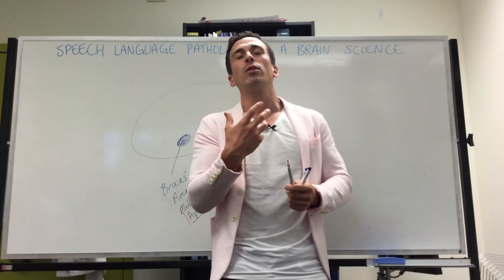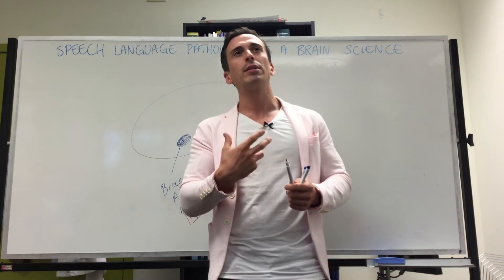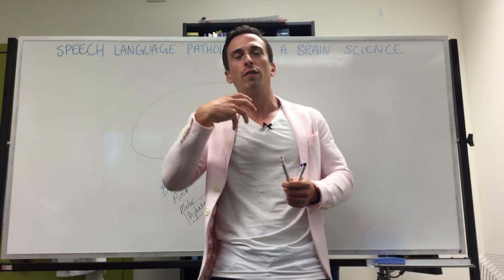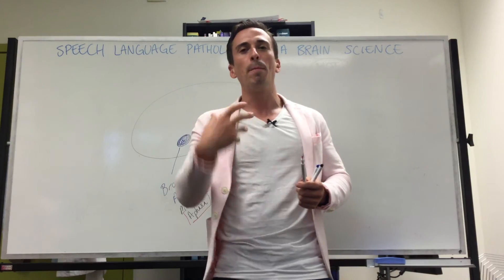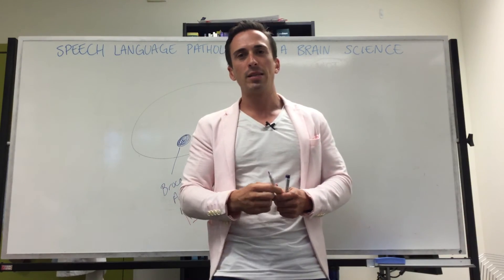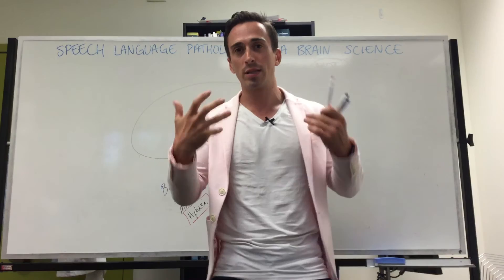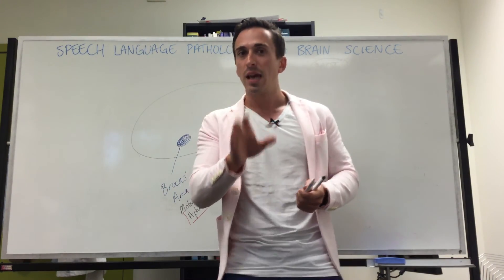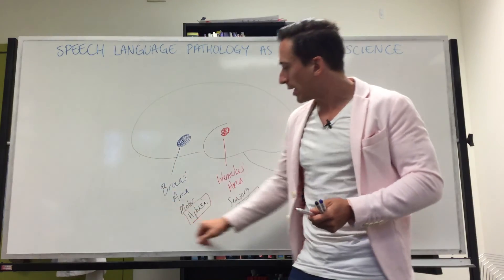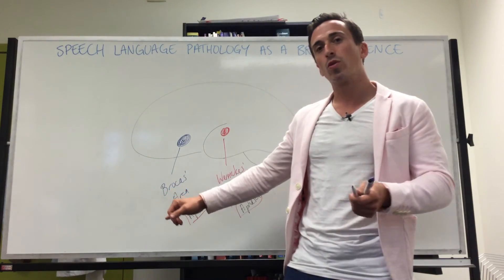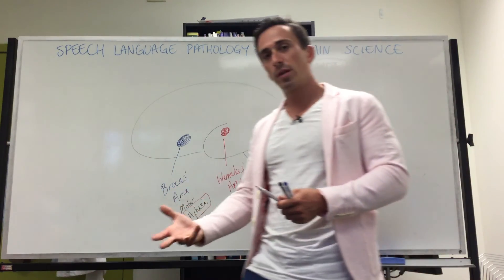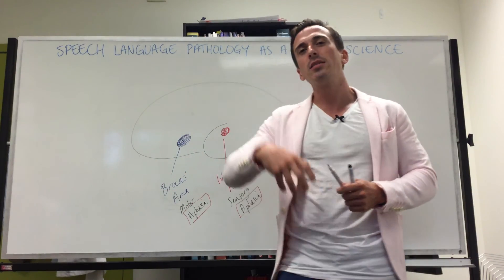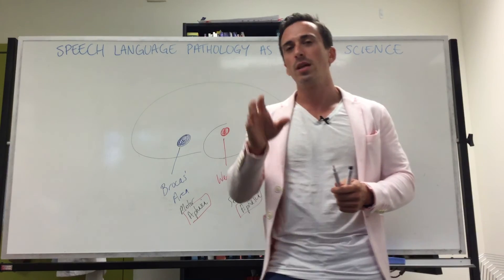There's another term we use: apraxia. Apraxia refers to a disorder of executing motor activity — an inability to perform a particular motor task at will. Again, it's not just what's happening with Broca's aphasia, but it could also involve movement such as walking or talking and so forth.